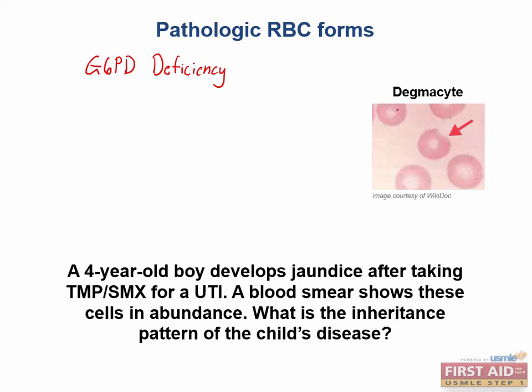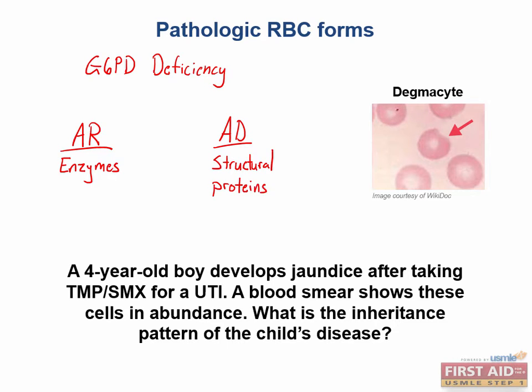The test will commonly test inheritance patterns for inheritable diseases. A good tip for most of these inheritance patterns is that diseases caused by mutations in enzymes tend to be autosomal recessive, while diseases caused by mutations in structural proteins tend to be autosomal dominant. This is because if one allele for an enzyme produces a defective product, you still have the other half of the enzymes to carry out the work.